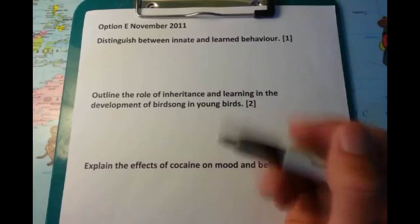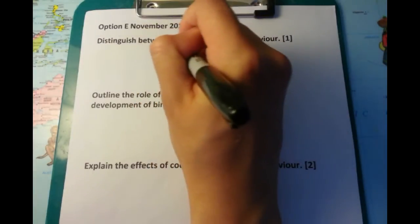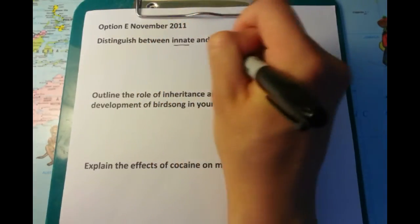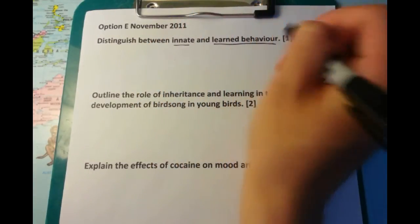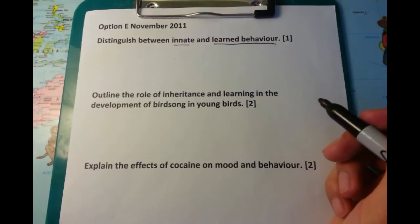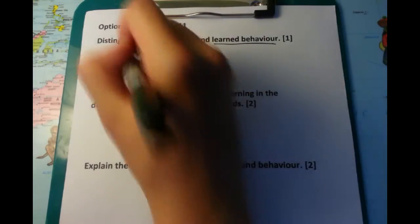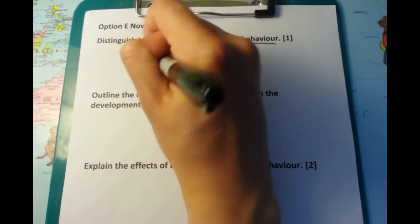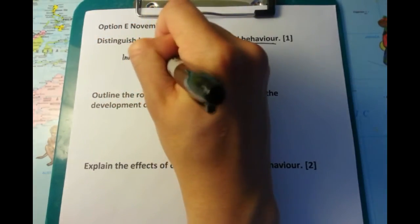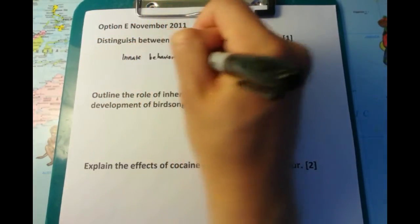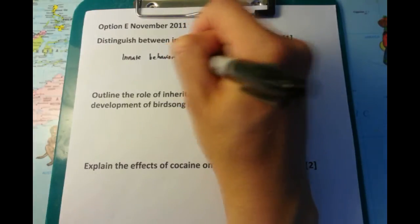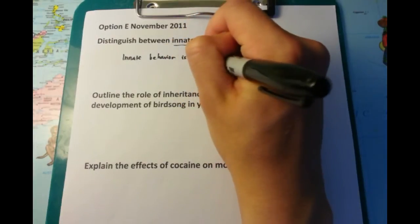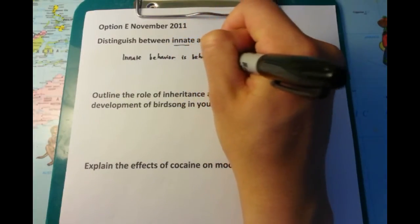This is the Option E paper from November 2011. The first question asks to distinguish between innate and learned behaviour for one mark. This is a question you should definitely know — it's basically down to definitions.